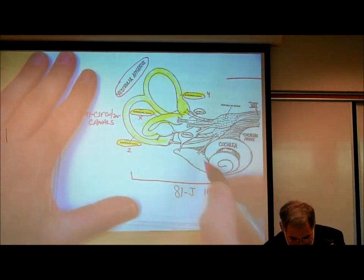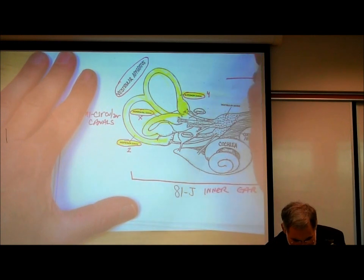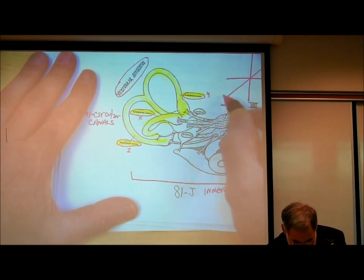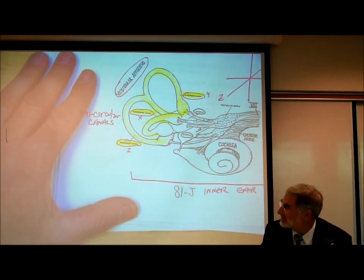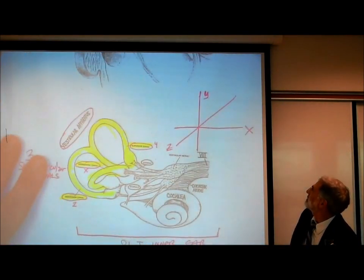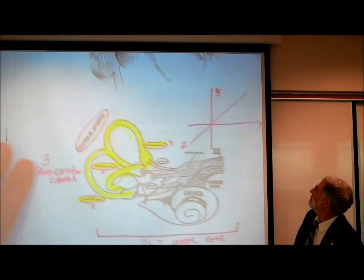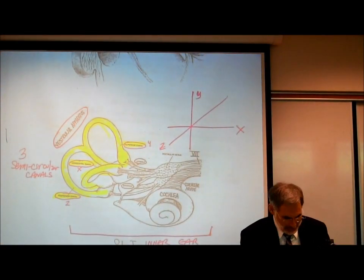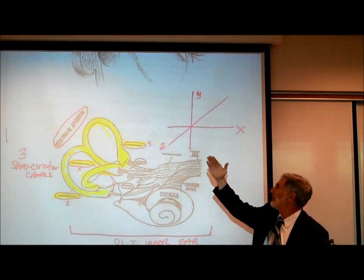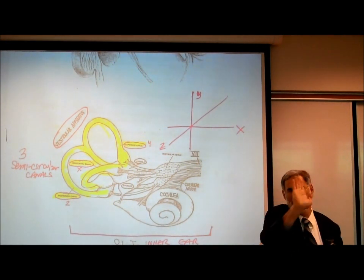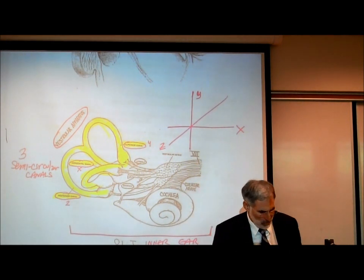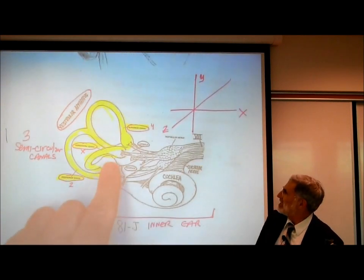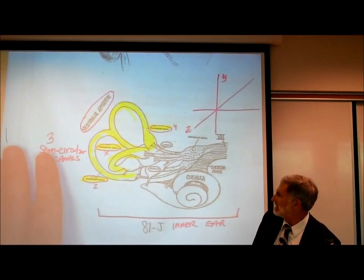In math, this would be the x-axis, the y-axis, and then there's a z-axis — horizontal, vertical, and the one coming straight towards you and going into the board. That's how these three semicircular canals are oriented.